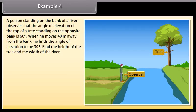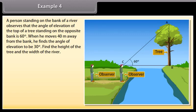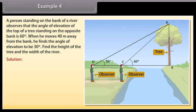A person standing on the bank of a river observes that the angle of elevation of the top of a tree standing on the opposite bank is 60 degrees. When he moves 40 meters away from the bank, he finds the angle of elevation to be 30 degrees. Find the height of the tree and the width of the river. Let height of the tree be Y and width of the river be X. CD equals 40 meters.